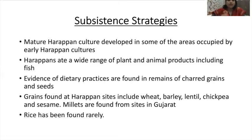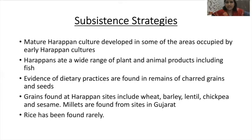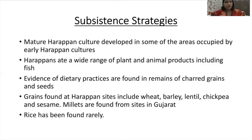Now let us see the subsistence strategies. The mature Harappan culture developed from areas occupied by early Harappan culture — it did not come about suddenly but gradually translated. Harappans ate a wide range of plant and animal products including fish. Evidence of dietary practices is found in remains of charred grains and seeds. Grains found at Harappan sites include wheat, barley, lentil, chickpea, and sesame. Millets are found from sites in Gujarat. Rice has been found rarely, and even in present-day Punjab, rice is not grown much.